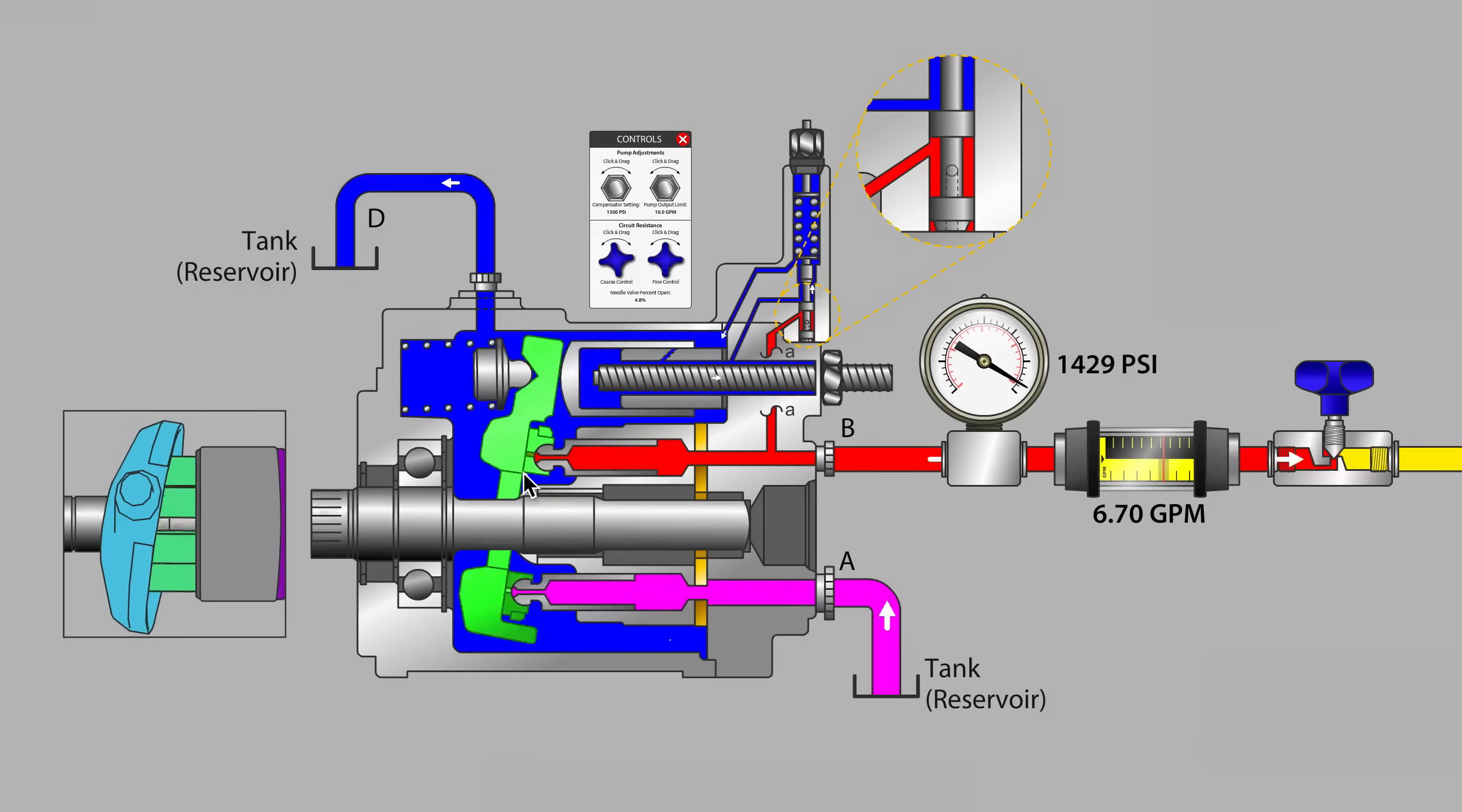We're lubricating the back of the slipper pad against the swash plate. We're lubricating the piston ball as it is socketed into that slipper pad or piston shoe. We are lubricating as well the cylinder barrel against the porting plate.